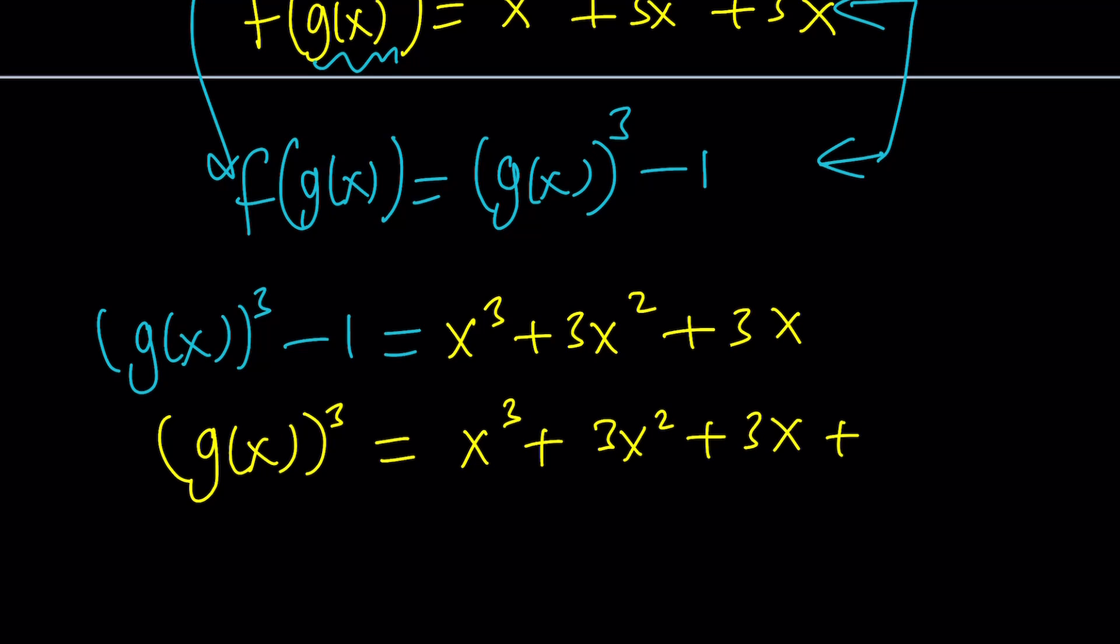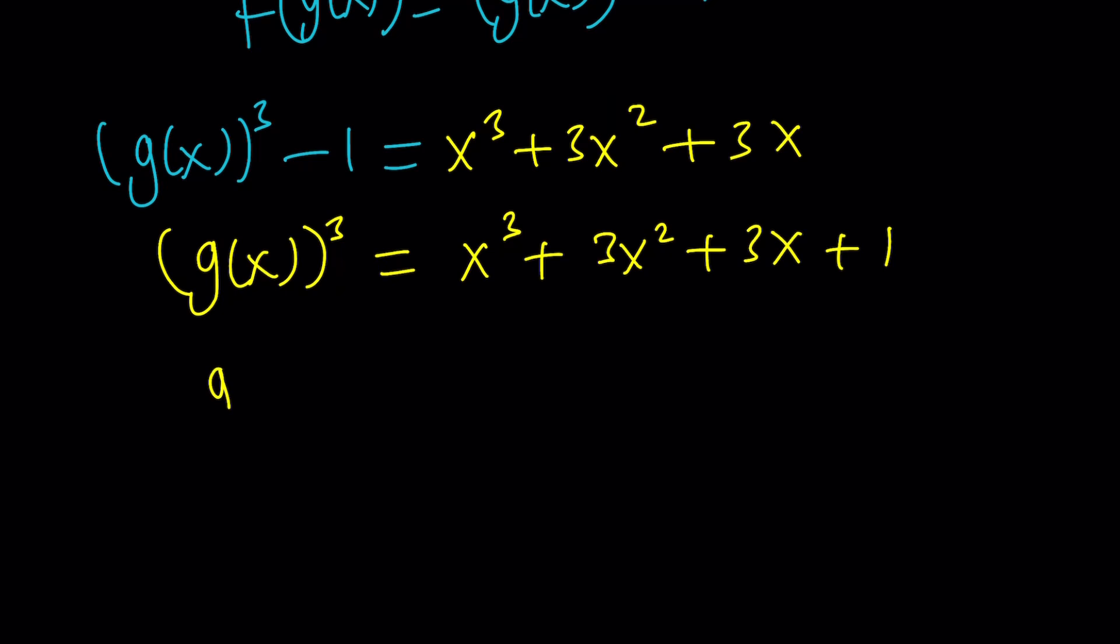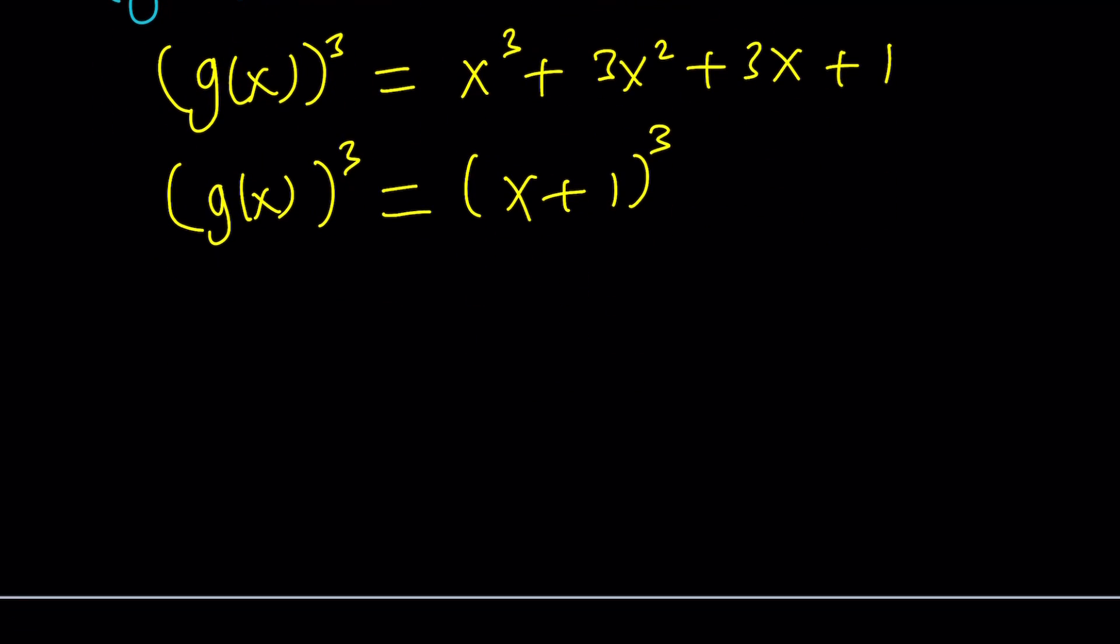That's going to give us g of x cubed. Again, the right hand side is a perfect cube, isn't it? So, we can write this as x plus 1 to the third power. As you know, this comes from Pascal's triangle, the binomial theorem. 1, 3, 3, 1 are the coefficients, so on and so forth. But from here, if you cube root both sides, guess what you're going to get? You're going to get g of x as x plus 1. So, that will be the answer.